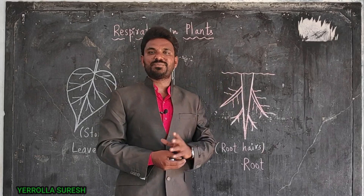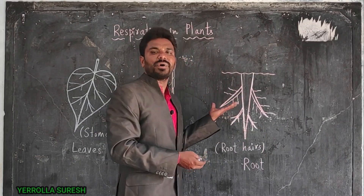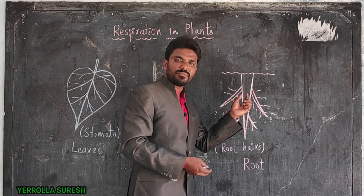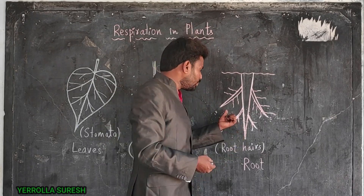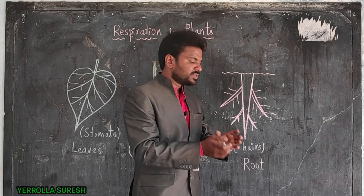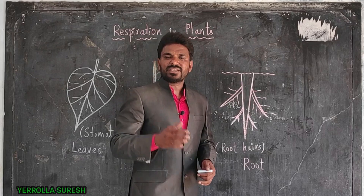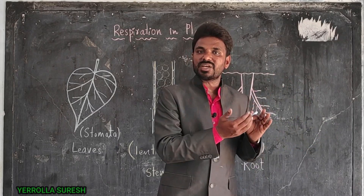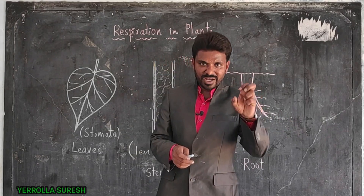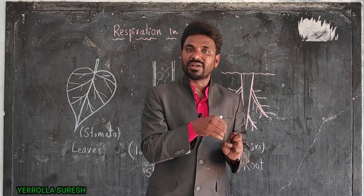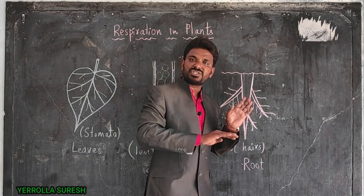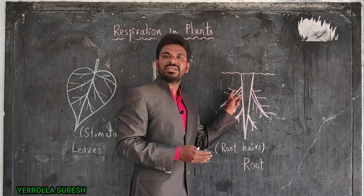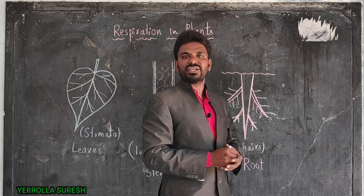Roots also perform respiration independently. The root system has many small roots, which develop very small hair-like structures called root hairs. Root hairs have small openings and are distributed among soil particles. Some air is already available in the ground — gaps between the soil particles are filled with air. Root hairs receive oxygen from this air present between the soil particles. The oxygen is distributed to all parts by diffusion, and carbon dioxide produced by the cells is released back into the soil by diffusion.